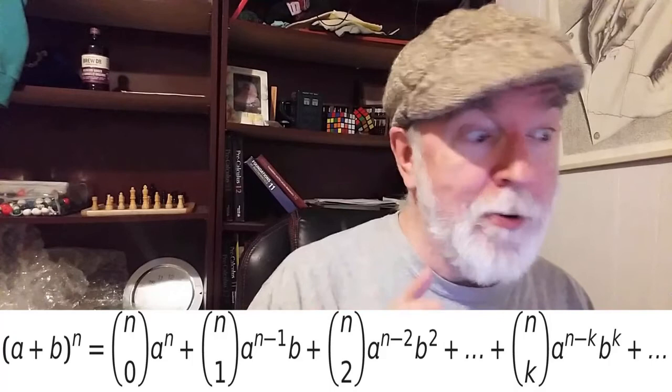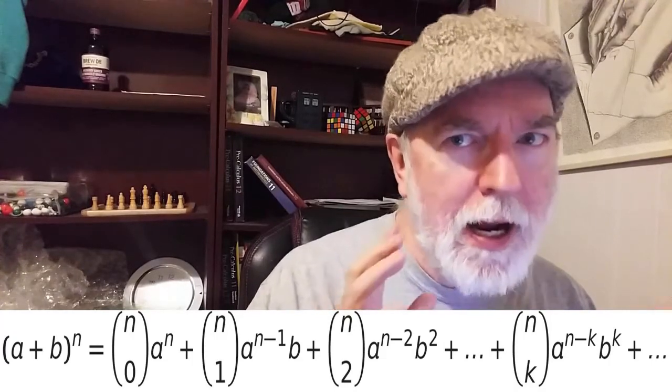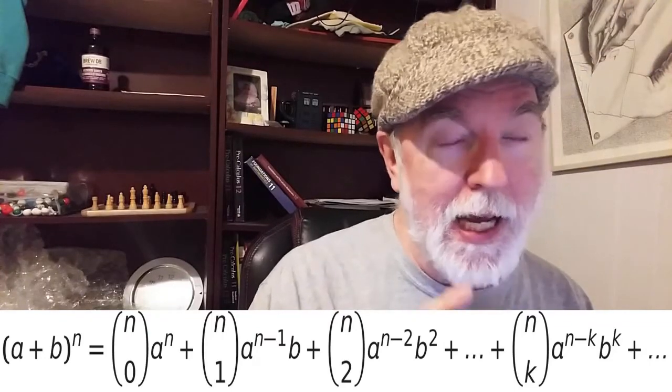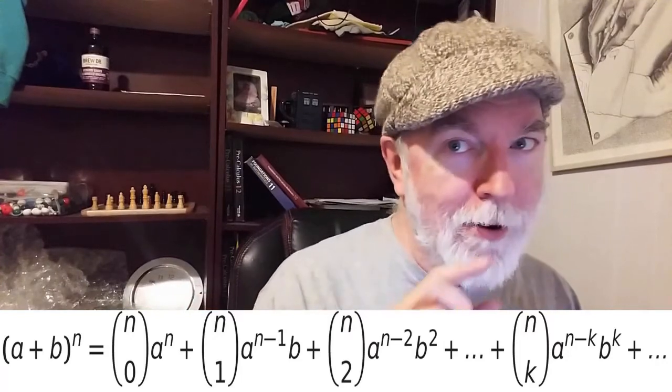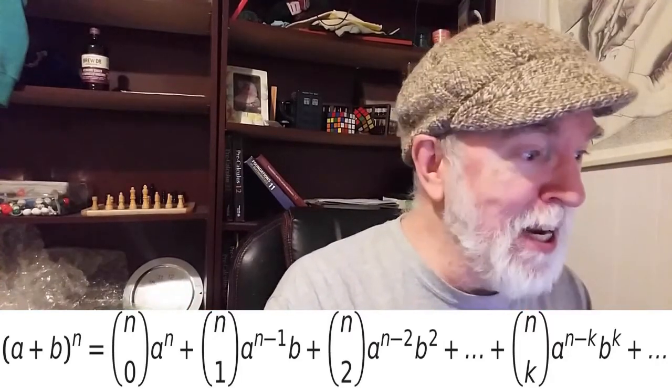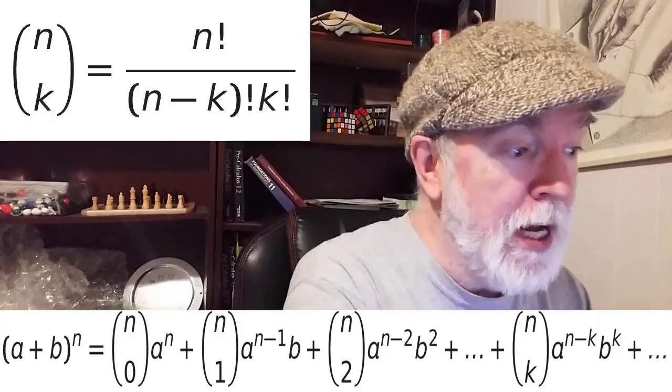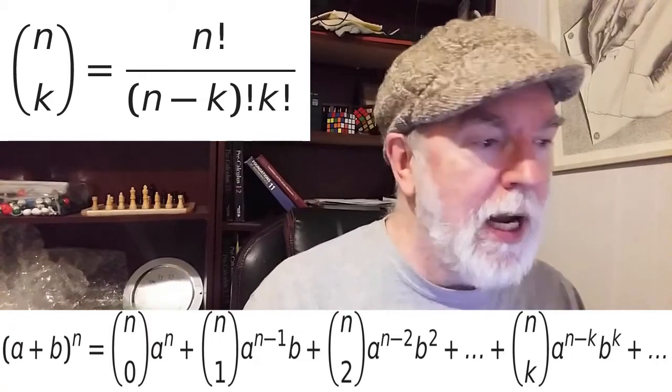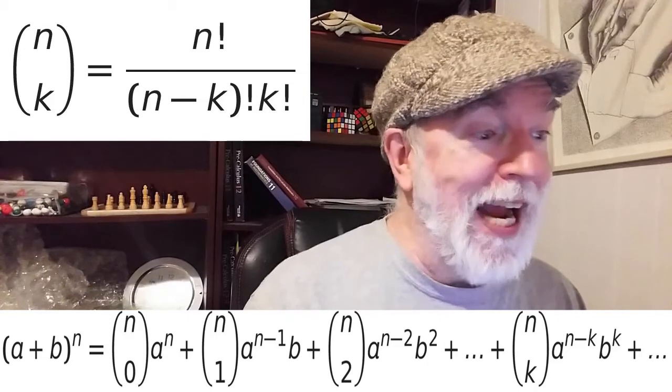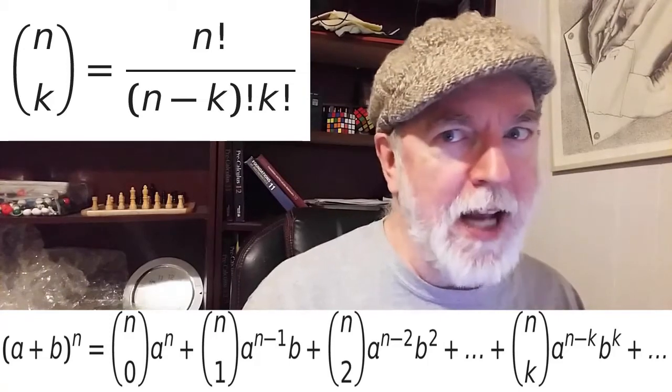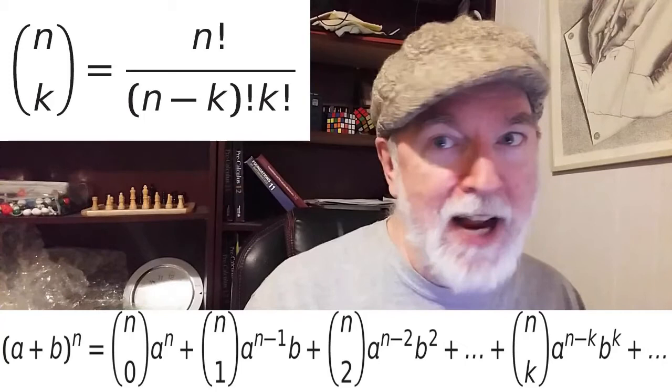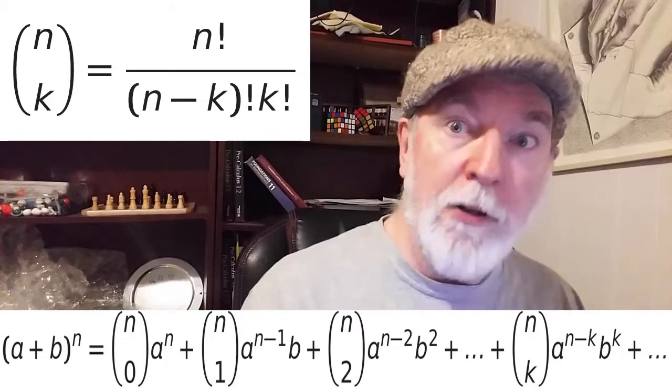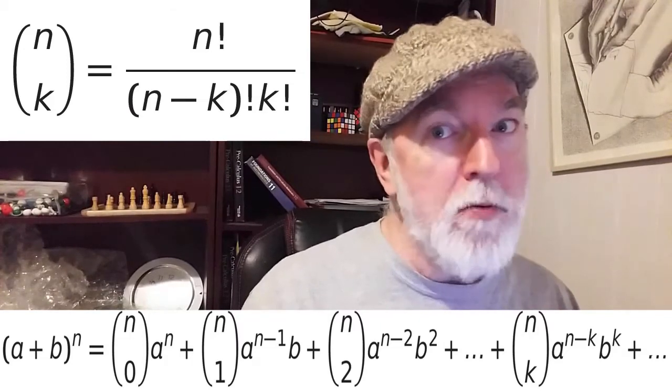So we're going to start with kind of a generic expression of the binomial theorem: a plus b all to the power of n equals a bunch of stuff. The thing we need to focus on is this binomial coefficient, n choose k, because we've got n factorial in the numerator. If n is a half or negative five or something like that, we don't want one half factorial up there. There's a way to deal with that, but we don't need to go there.